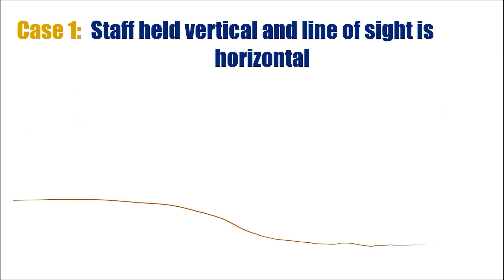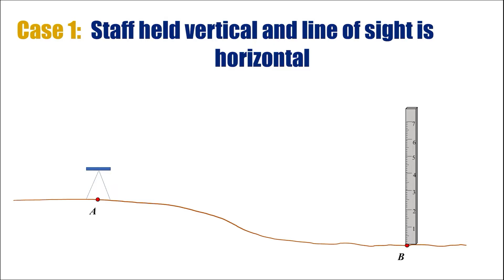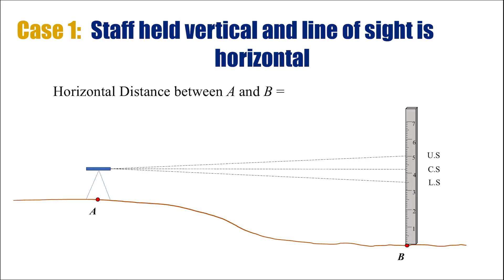Now let's discuss how the calculation can be done in this case. The instrument is at one point and the staff at the other. When performing tachymetric surveying on field, we have three readings: upper, central, and lower stadia readings. The formula for horizontal distance between point A and point B is MS plus C, where M and C are the multiplying and additive constants depending on the type of lens used. S is the stadia intercept, which is the difference between the upper and lower stadia readings.